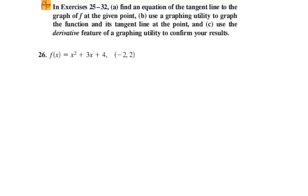In exercises 25 through 32, we want to find an equation of the tangent line to the graph of this function f at the point given. In problem 26, the function is x squared plus 3x plus 4, and the point is negative 2 comma 2. We'll use our graphing calculator to graph them and use the derivative function to confirm the results.